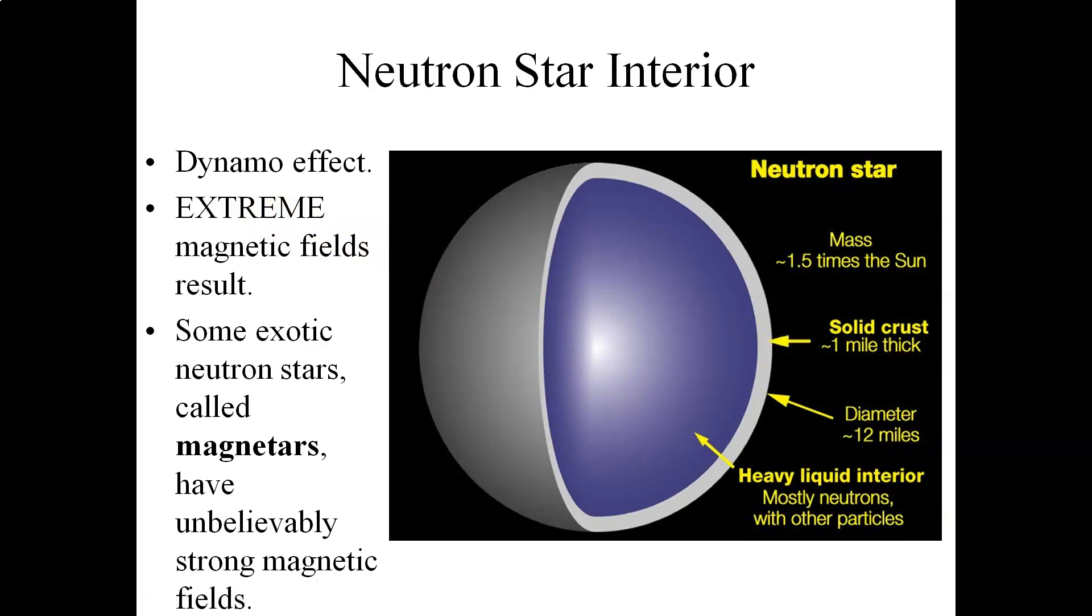Now, if neutron stars weren't weird enough, there's an even weirder version of neutron stars with extremely powerful magnetic fields, and these particular objects are referred to as magnetars. A magnetar is basically an extreme version of a neutron star with an extremely strong magnetic field. I, in particular, like the word magnetar. It's one of the cool names that astronomers come up with when they are trying to describe all these weird objects.